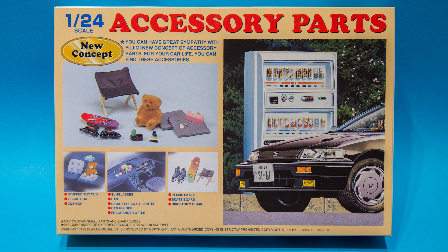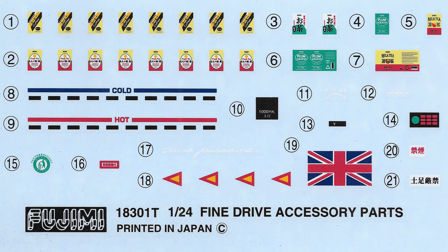Starting off this yet another new series is the Fujimi Accessory Parts New Concept. This includes a vending machine, a cute little toy bear, skateboard, cigarette packs, inline skates, director's chair, loads of random stuff in this.